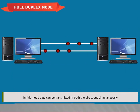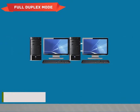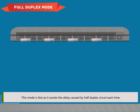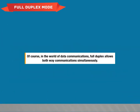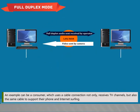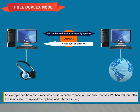Full Duplex mode allows data to be transmitted in both directions simultaneously. This mode is fast as it avoids the delay caused by half duplex circuits. In full duplex, both-way communication occurs simultaneously. An example is a consumer who uses a cable connection to not only receive TV channels but also uses the same cable to support their phone and internet surfing.